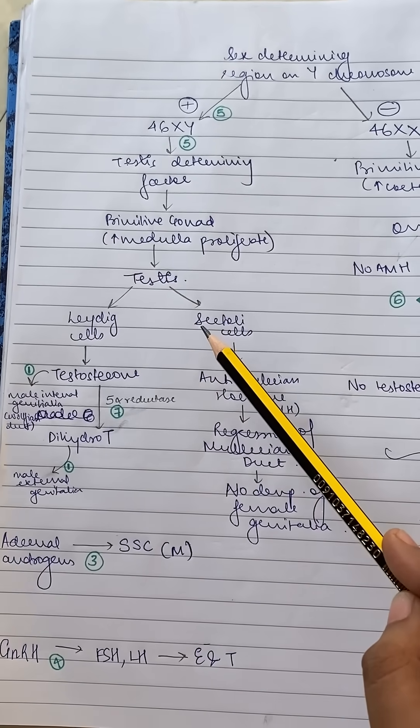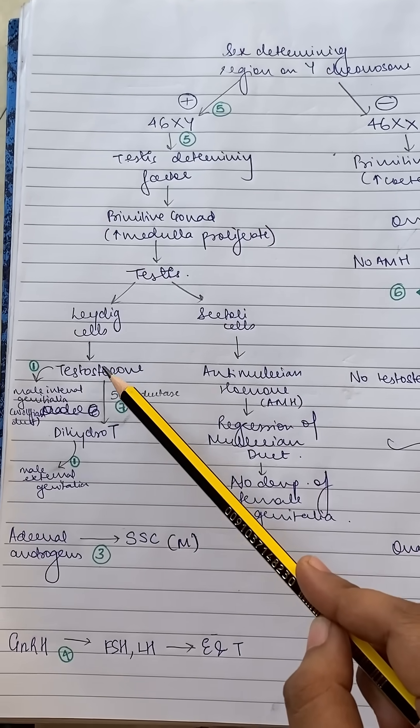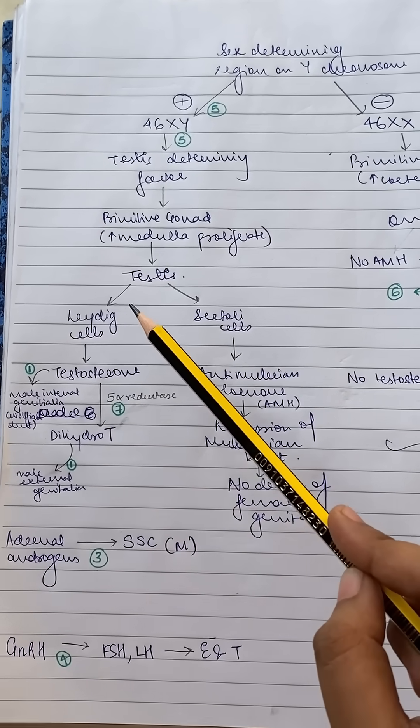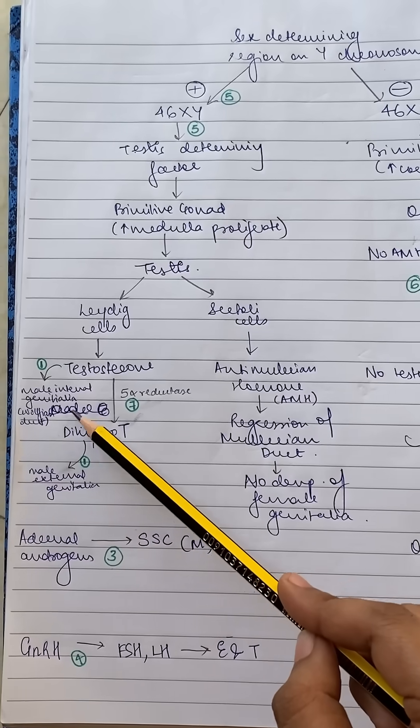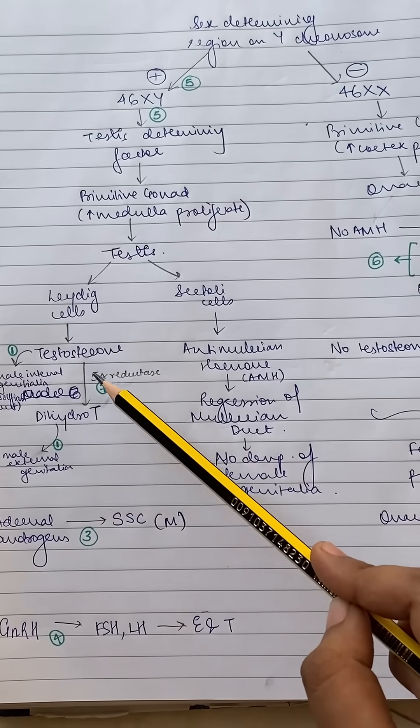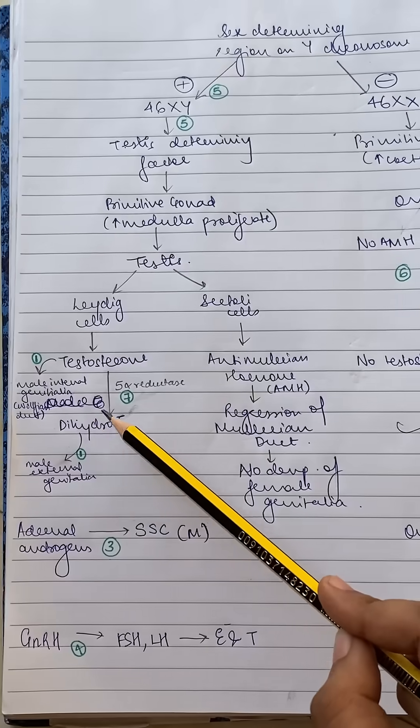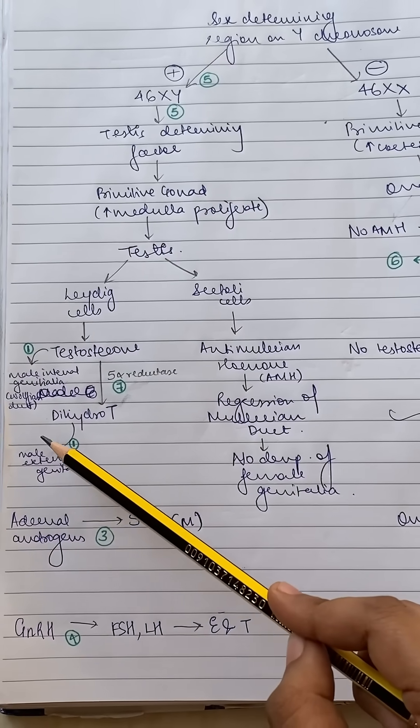Now testis has Leydig cells and Sertoli cells. Leydig cells are responsible for the production of testosterone which leads to the differentiation of Wolffian ducts into the male internal genitalia, the vas deferens etc. Now testosterone is converted by 5-alpha reductase into dihydrotestosterone which helps in the development of the male external genitalia which is the penis.